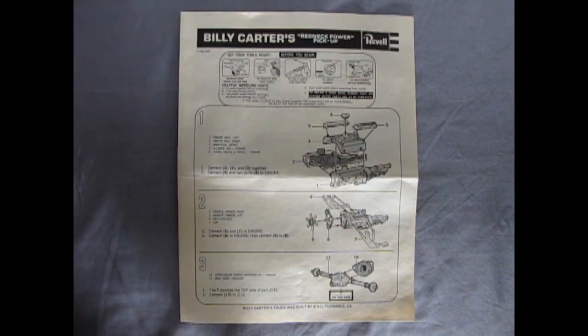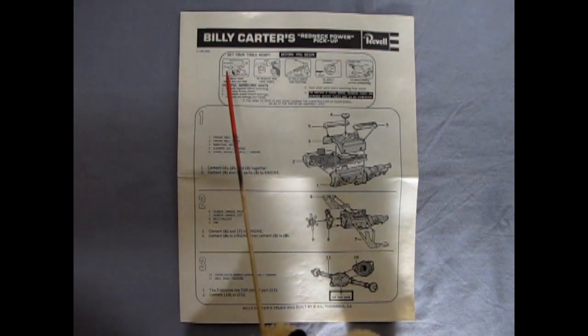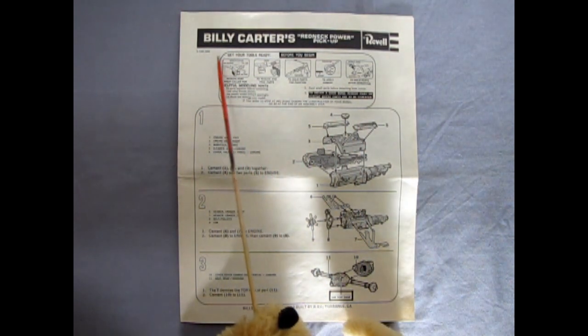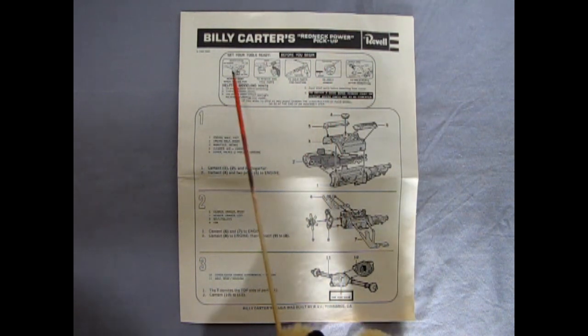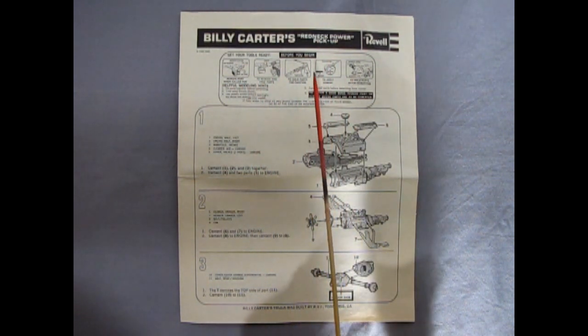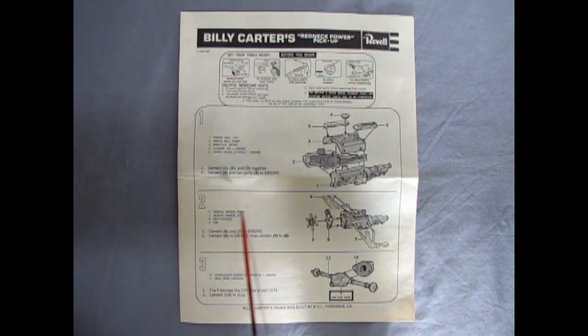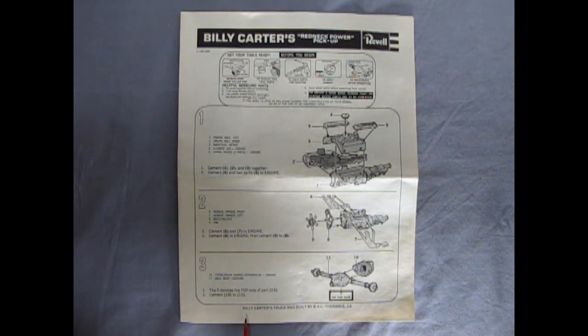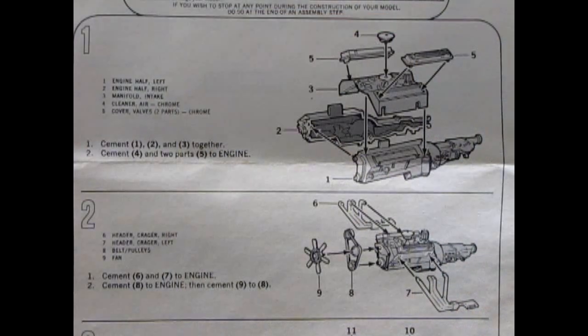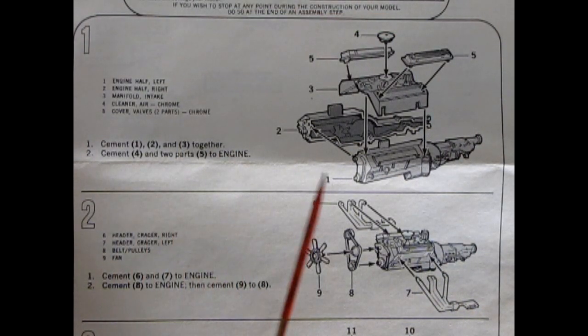So as we look at these instruction sheets we can see the pretty much the typical 1970s Revelle paperwork in here. And there it says Billy Carter's Redneck Power Pickup. And these are the little pictures of what we need to know before we build our model kit. This is the standard panels we've got which we'll take a look at in a minute. But down here on the bottom it says Billy Carter's truck was built by RVI in Torrance, California.